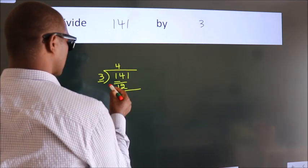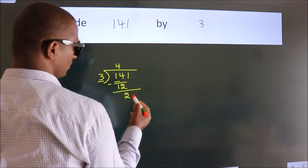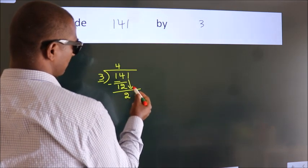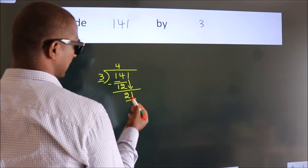Now we should subtract. We get 2. After this, bring down the beside number. So 1 down. So 21.